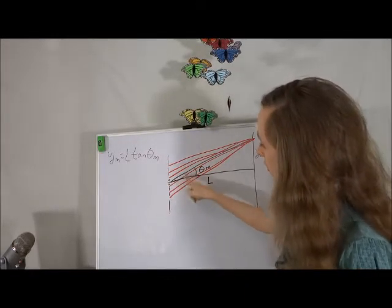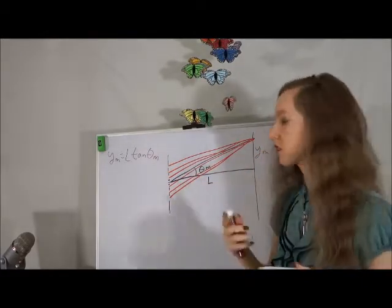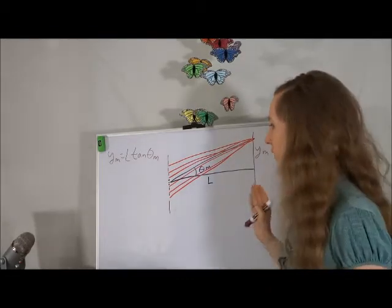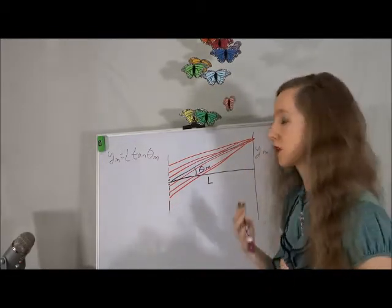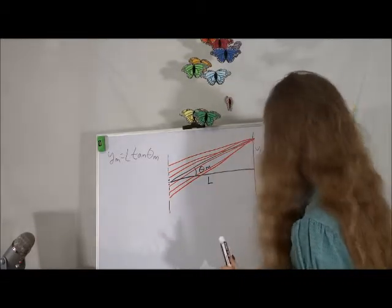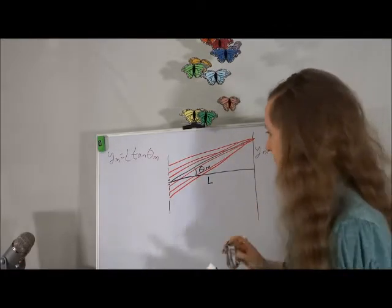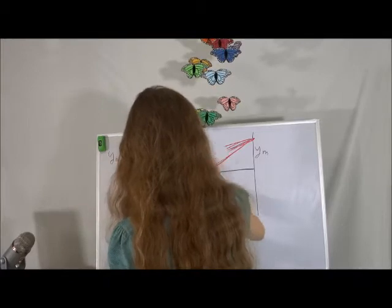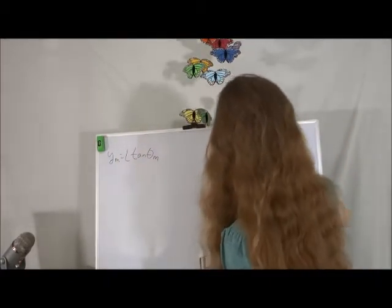Next we're going to zoom in on our slits to the point where our light rays all look roughly parallel, and we're going to do a little bit of trig. It's going to be the exact same trig as we did with the double slit. Are there any questions so far?